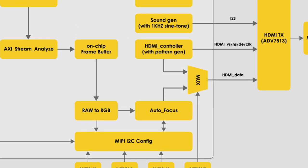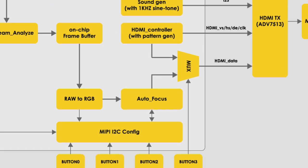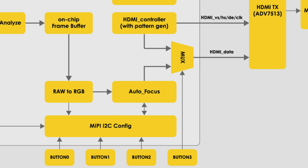The raw-to-RGB module reads the Bayer pattern from the on-chip memory buffer and converts it into an RGB image. The RGB image is then output to the HDMI output. This module is also responsible for calculating the mean values of R, G, and B, which are used for white balance settings.